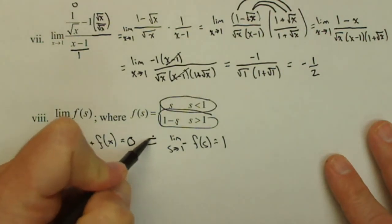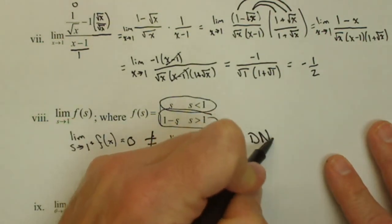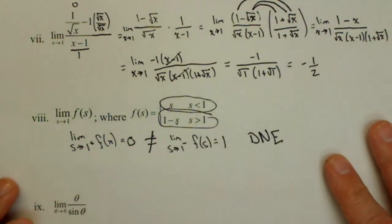Since those two are not equal, this limit does not exist. If these two had come out to the same value, the limit would exist, and that would be the answer to limit as s approaches 1 of f of s.